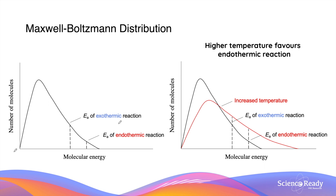This concept can be better understood using a Maxwell-Boltzmann distribution graph, which shows the variation in kinetic energy of molecules in the system. On the left graph, the activation energies of the exothermic and endothermic reactions are labelled as EA. Only molecules with kinetic energy greater than the activation energy can result in a chemical reaction upon collision. For the endothermic reaction, only molecules with more energy than its particular activation energy value can react.